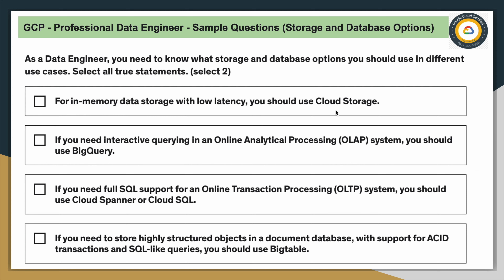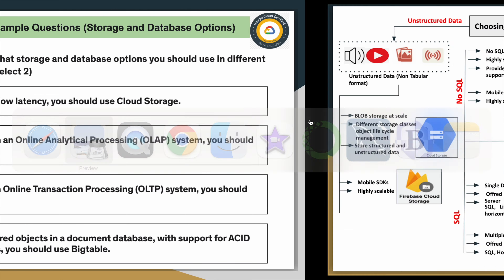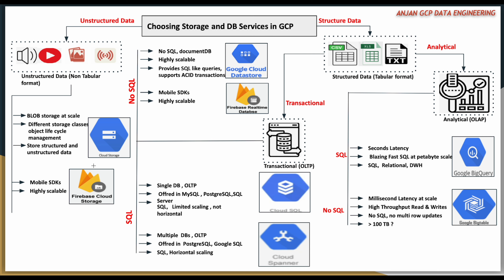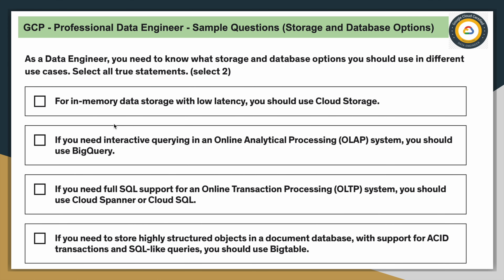Option one: for in-memory data storage with low latency, you should use Cloud Storage. Let's check the flow diagram. Cloud Storage is used for unstructured and structured data — it's essentially blob/object storage at scale. You can store data in different storage classes and apply object lifecycle management rules. But in-memory storage and low latency are not related to Cloud Storage at all, so you can ignore this option.